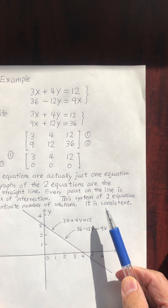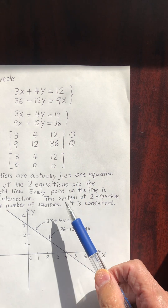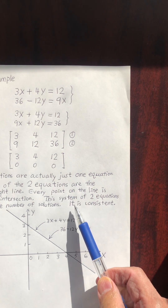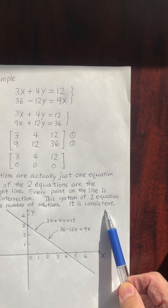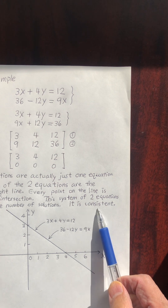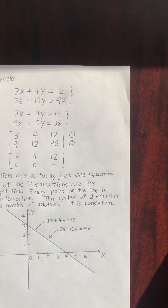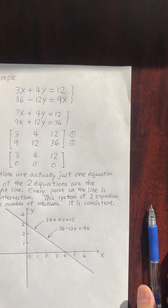There is a term for this: if you can find a solution, we say the system of equations is consistent. Consistent means you have a solution — it doesn't matter whether you have one solution or an infinite number of solutions. As long as you have a solution, it is consistent. In the other example where there is no solution, we say it is inconsistent. That is our lesson two. Thank you for watching. Goodbye.